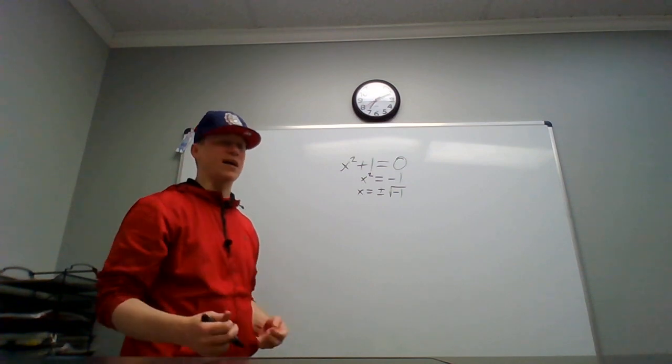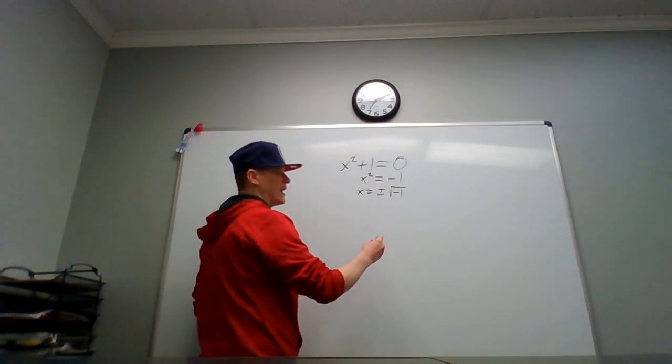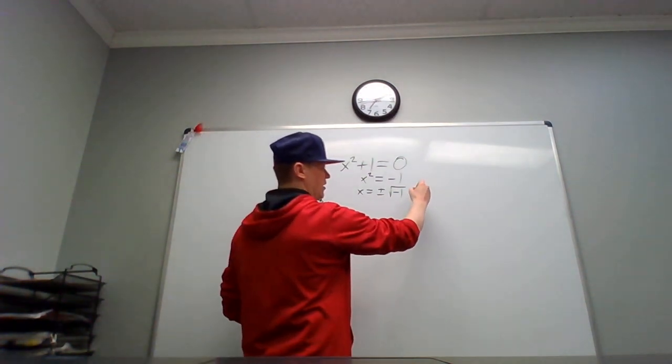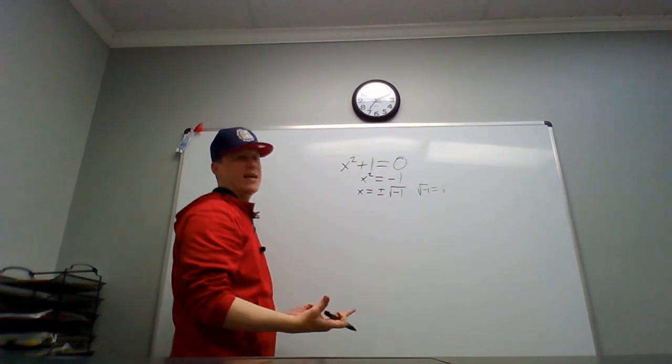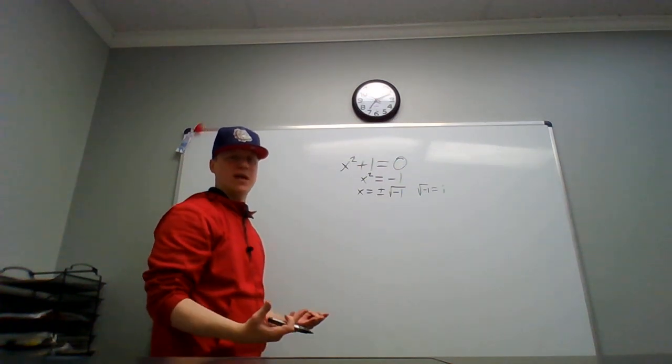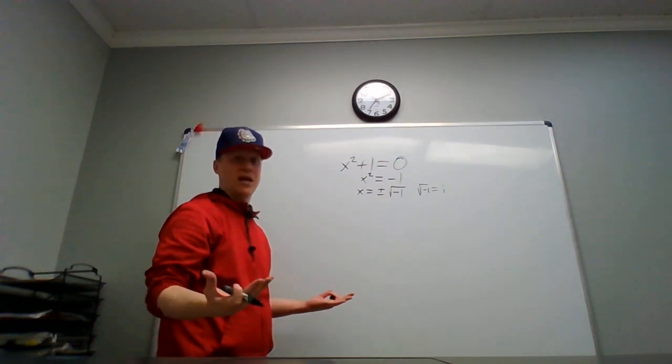So later, somebody else would come along and say that the square root of negative one is equal to i. And i became the symbol for these imaginary numbers, which is pretty simple to extrapolate from imaginary.